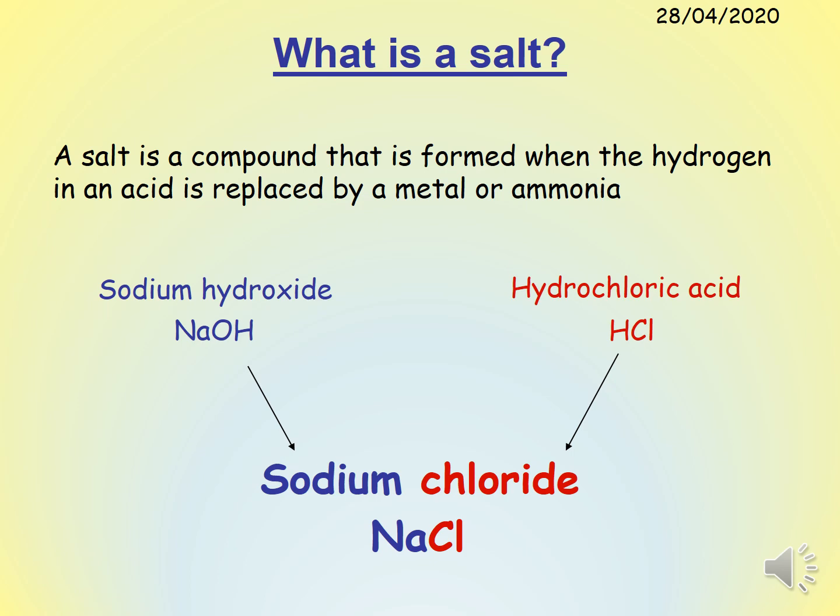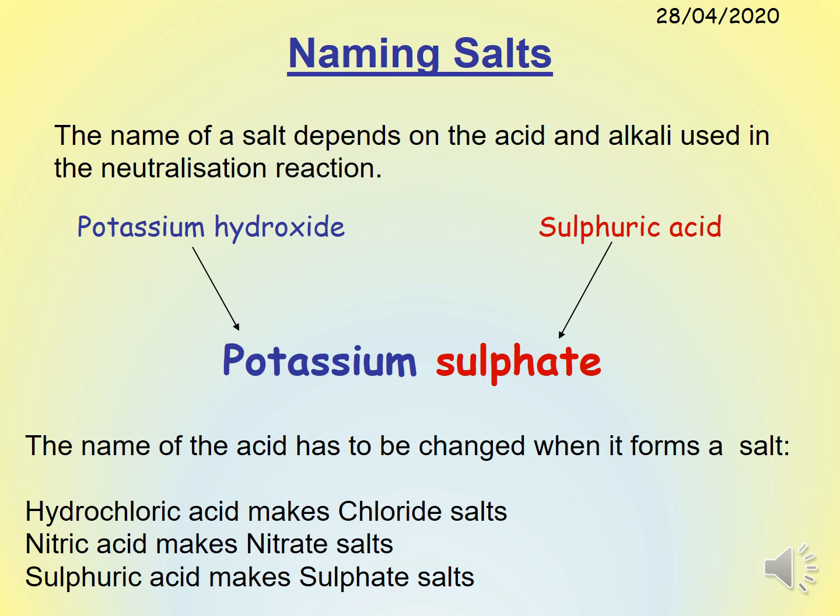Here's another slide going through this in a bit more detail. Sodium hydroxide gives the salt the name sodium, and hydrochloric acid — because it always makes chlorides — gives the name chloride, so we end up with sodium chloride. The symbols are the same: Na for sodium comes from sodium hydroxide and Cl for chloride comes from the hydrochloric acid. For a different example, potassium hydroxide gives potassium and sulfuric acid always makes sulfates, so here we've got potassium sulfate.